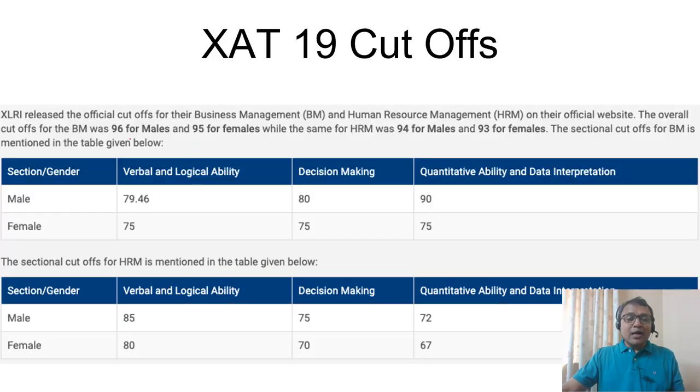For XLRI, the cutoffs are for BM 96% for males, 95% for females. For HRM, it's lower: 94% for males, 93% for females. The quant cutoffs are higher for BM, whereas in HRM the quant cutoffs are lower.